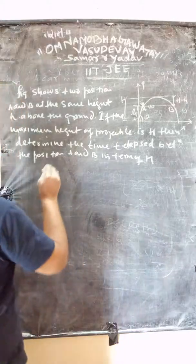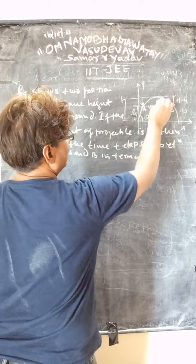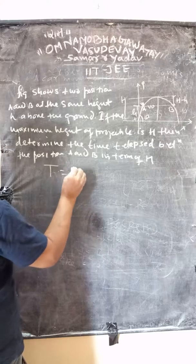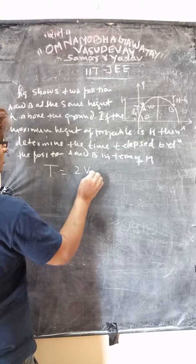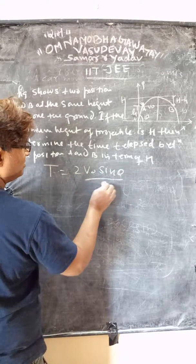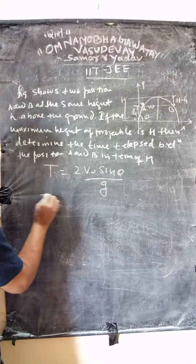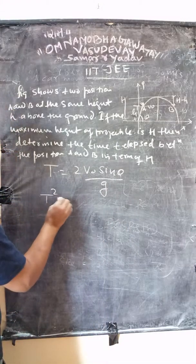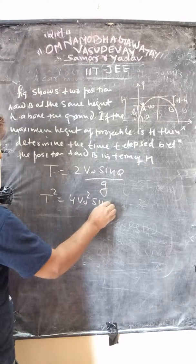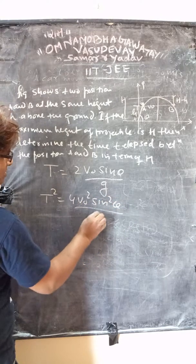We know that the total time of flight is given by capital T equals 2V0 sin theta upon g. Squaring both sides, T squared equals 4V0 squared sin squared theta upon g squared.